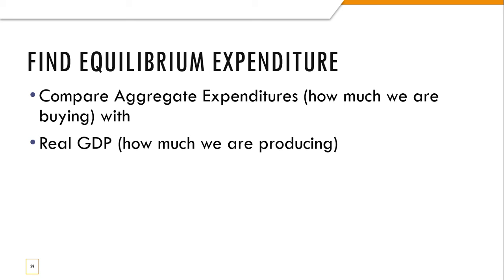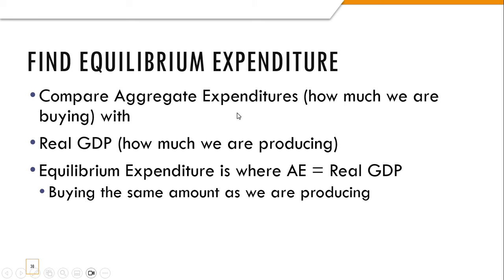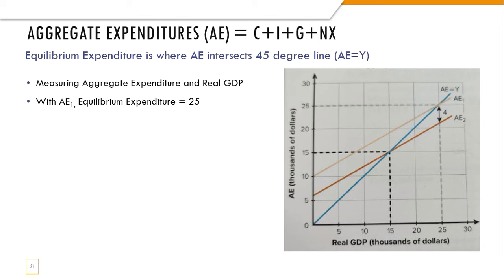We want to find the point where aggregate expenditures is the same as how much we're producing. We call that equilibrium expenditure. Aggregate expenditures is how much we're buying, real GDP is how much we're producing. So equilibrium expenditure is where those two are going to be equal—we're buying the same amount as we're producing.